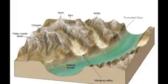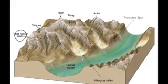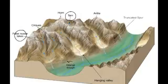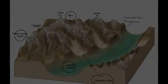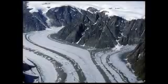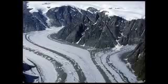Back to this picture: we now know what paternoster lakes are, what a tarn is, about glacial troughs and hanging valleys, and of course cirques, horns, arêtes, and truncated spurs. Here's an alpine glacier with a bunch of features you should now be familiar with, but there's a new one I want to call your attention to.